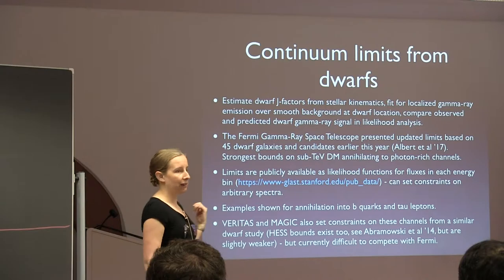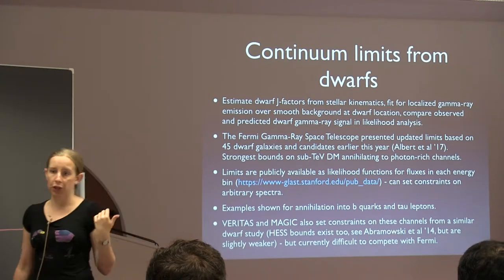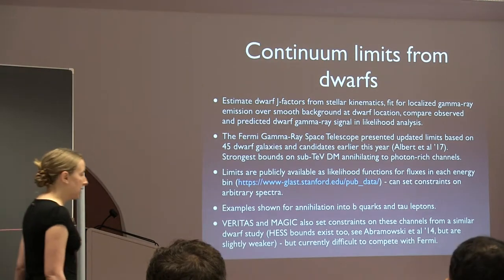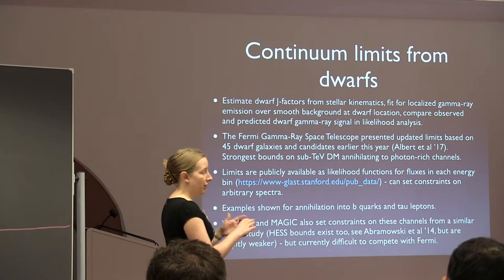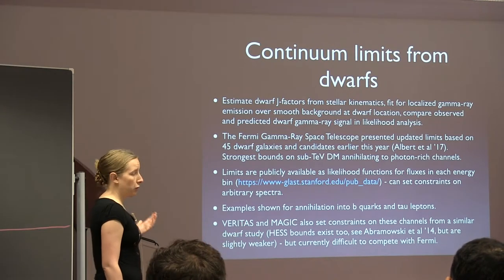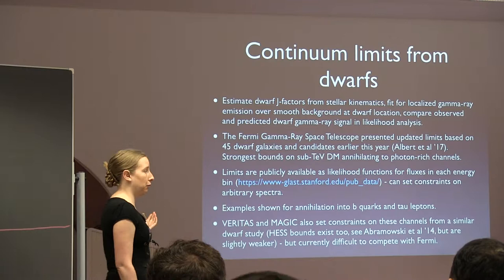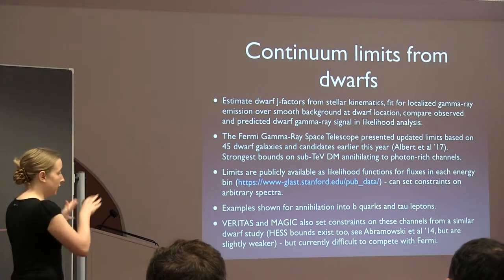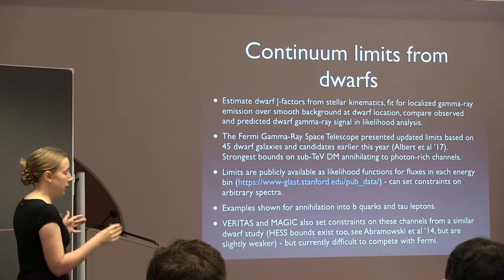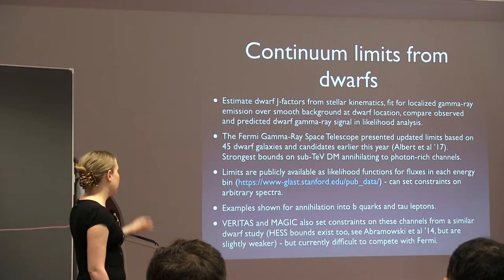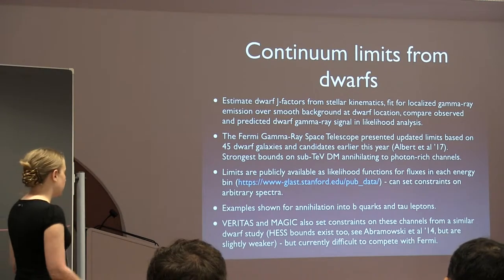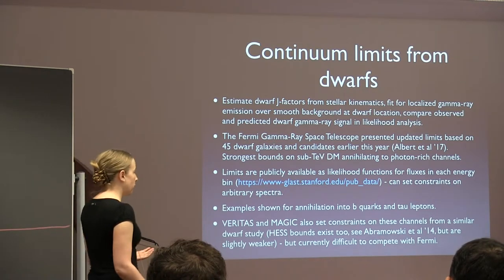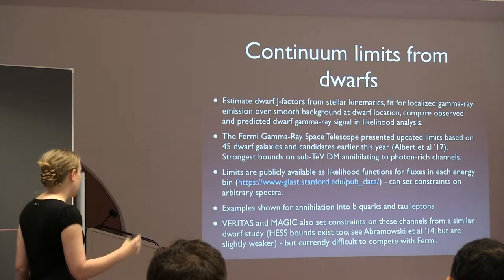The diffuse background in gamma rays primarily comes from charged cosmic rays interacting with the gas and starlight of the Milky Way. The spectra of those cosmic rays are roughly broken power laws, so the diffuse background spectrum also tends to be fairly power-law-like. So you're essentially doing a hunt for the broad continuum spectrum from dark matter annihilation or decay, then stacking all your dwarfs together by combining likelihoods, assuming errors from one dwarf to another are uncorrelated.